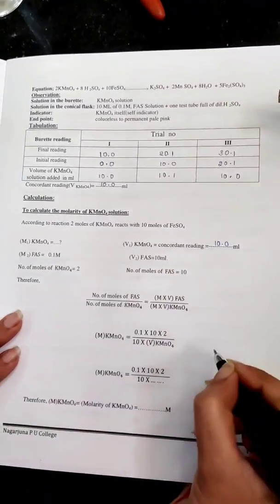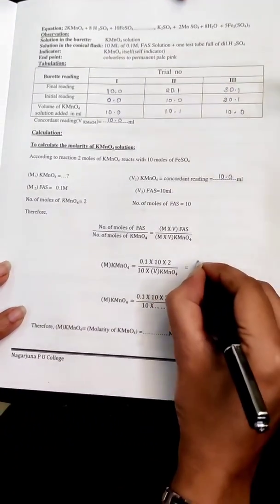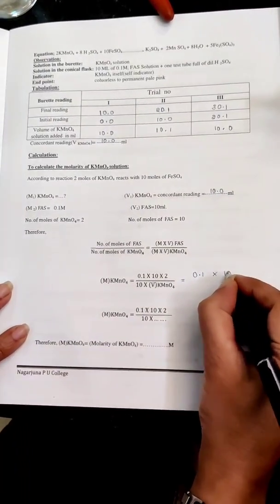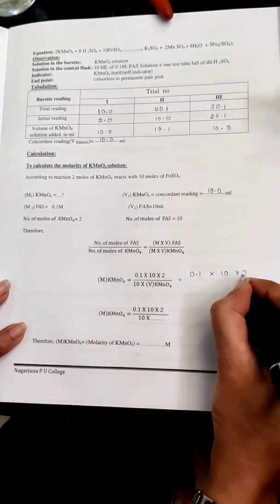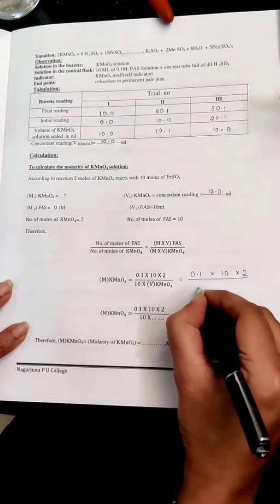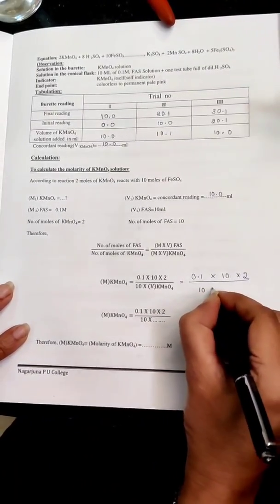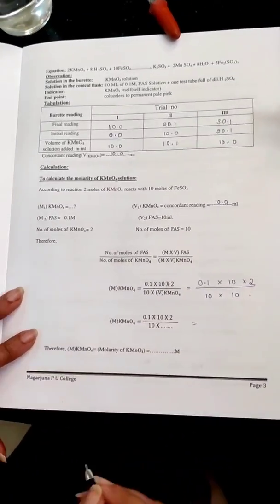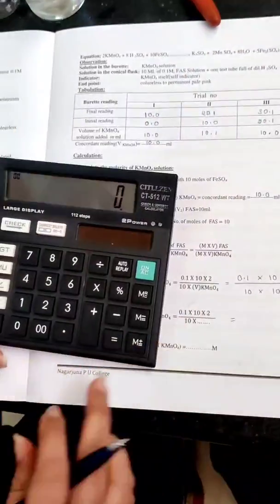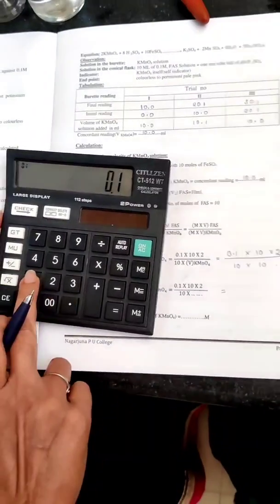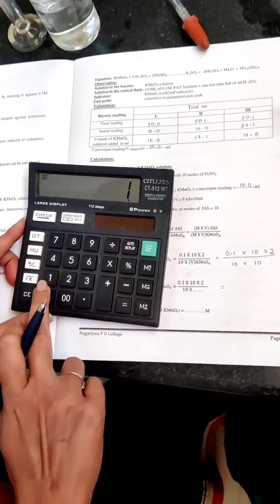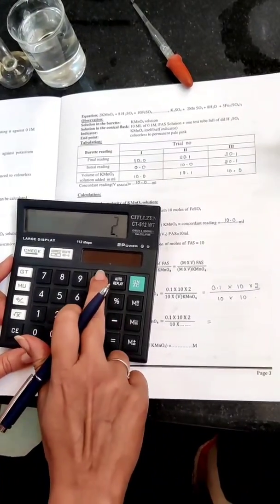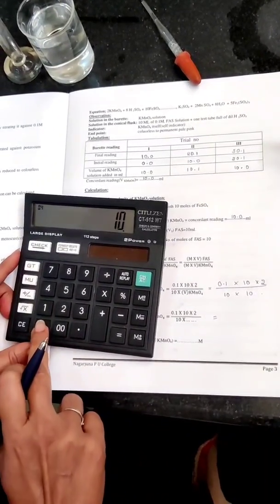Substitute the values. The concordant reading I have got here is 10.0. Number of moles of FAS divided by number of moles of KMnO4 equals M times V of FAS divided by M times V of KMnO4. Do the calculation. The final molarity of KMnO4 solution is 0.02 molar.